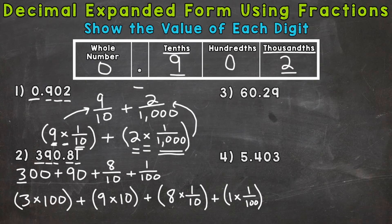So this is the same as that, same as that there, same as that there, and same as that there. All right, on to number three, where we have 60 and 29 hundredths.